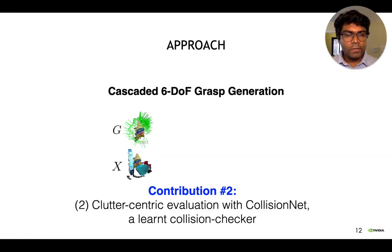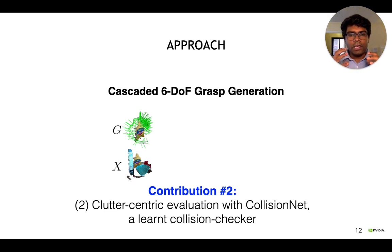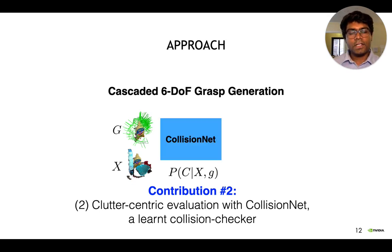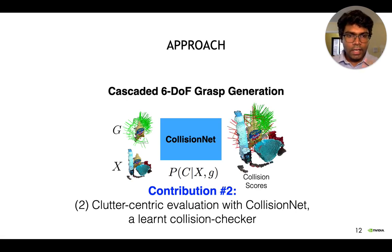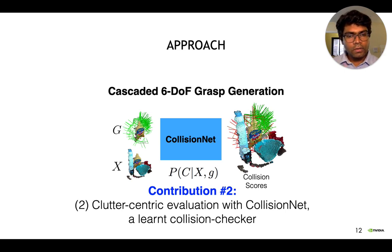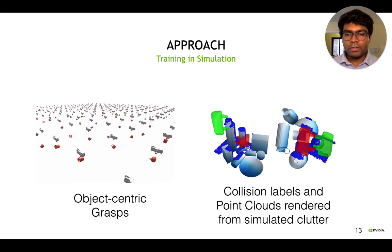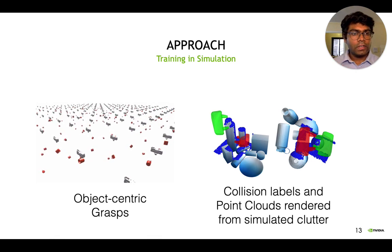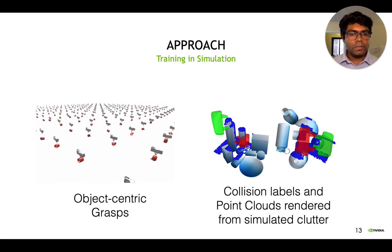This is followed by clutter-centric evaluation with Collision Net, which is our second contribution. We have a set of grasps for the target object and now consider them in the context of the full cluttered scene X. Collision Net is essentially a classifier which predicts a collision score for each grasp — green means more collision-free, red means more in collision. The best way to grasp the mustard bottle is from the top or from the right. Collision checking is typically done in simulation where you know the full pose and shape of objects; here, we generalize collision checking to unknown objects and scenes, so Collision Net is conditioned just on the point cloud observation. All training was in simulation using about 125 objects, and we constructed cluttered scenes from which we rendered synthetic point clouds and collision labels to train our networks.